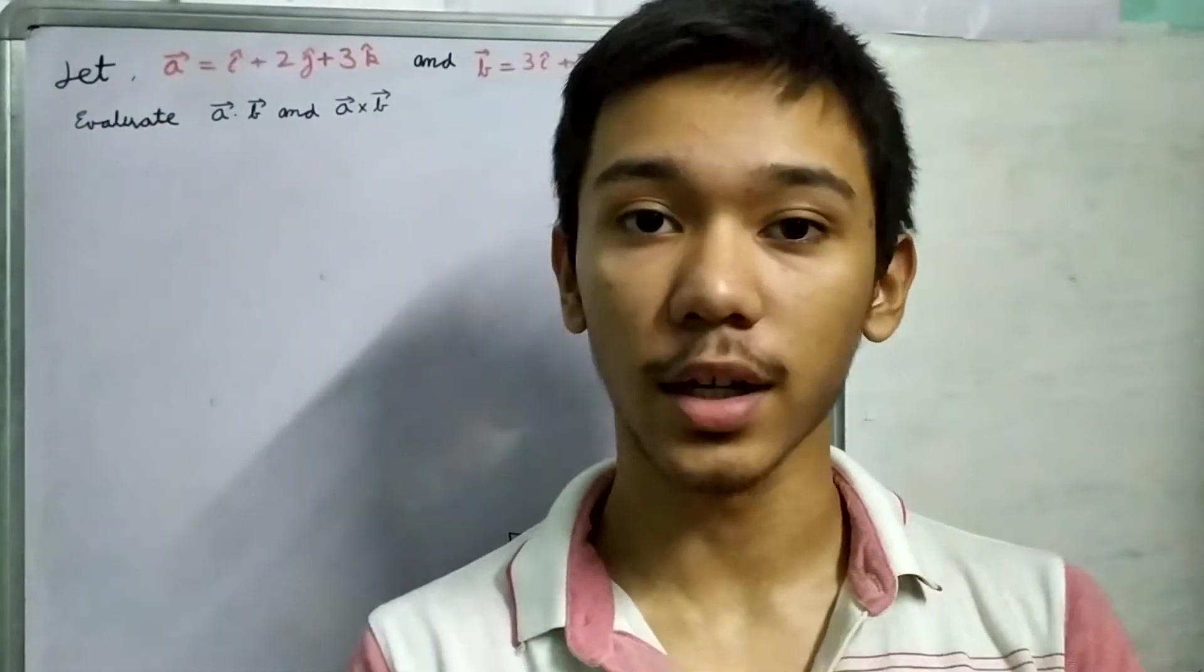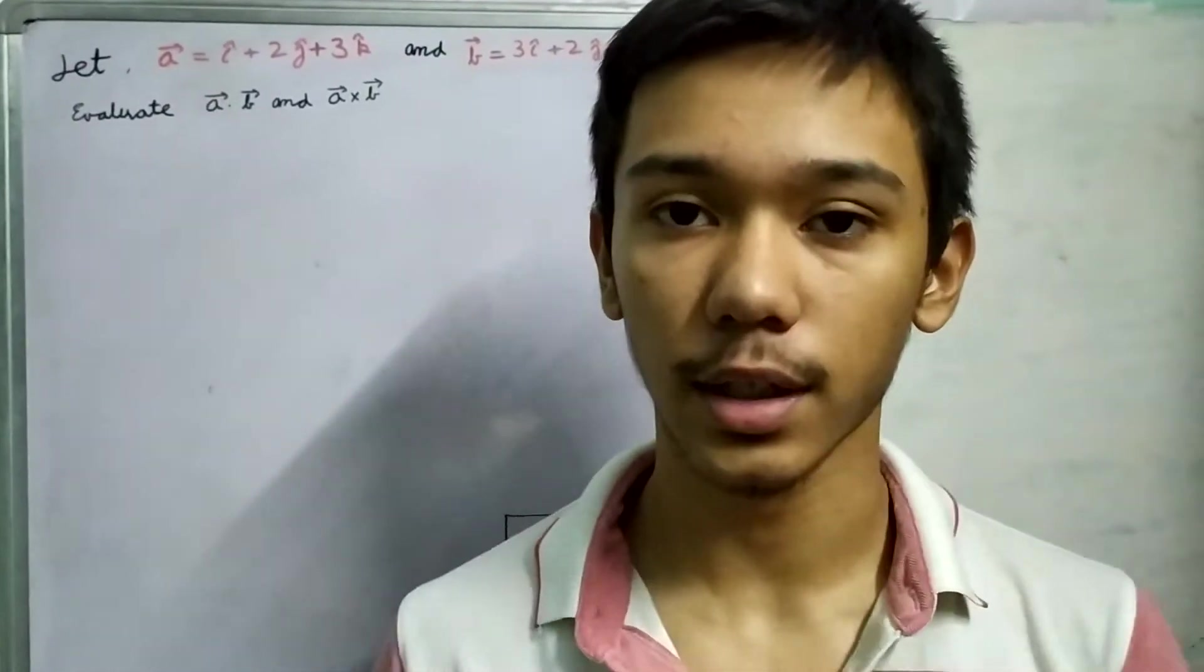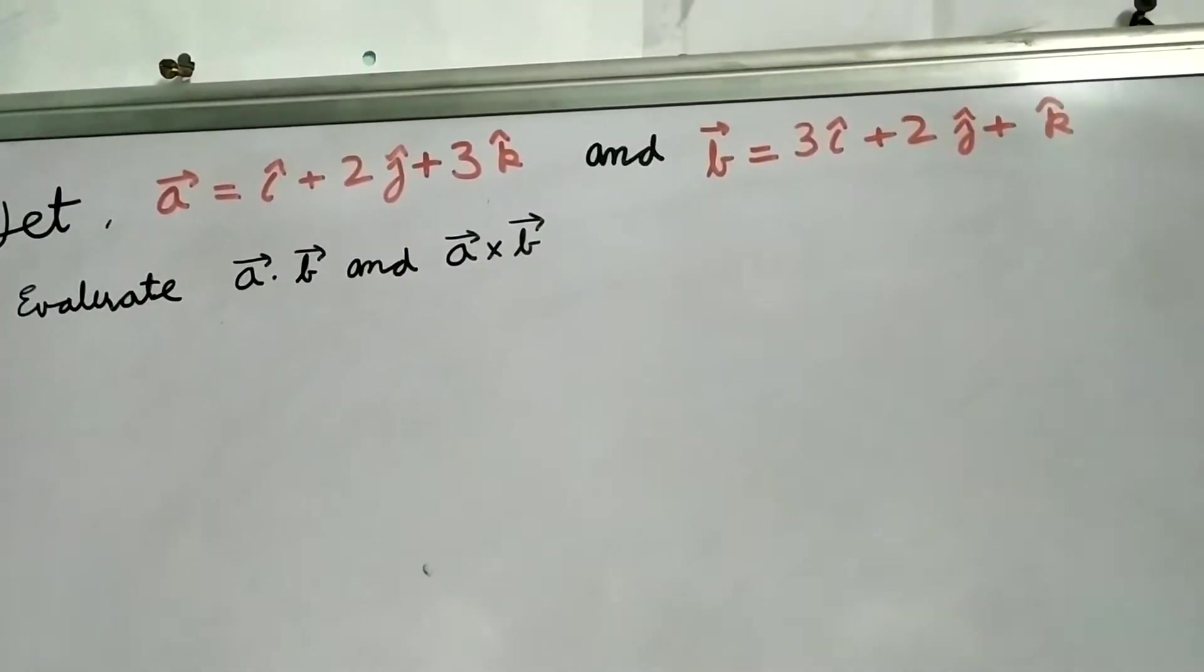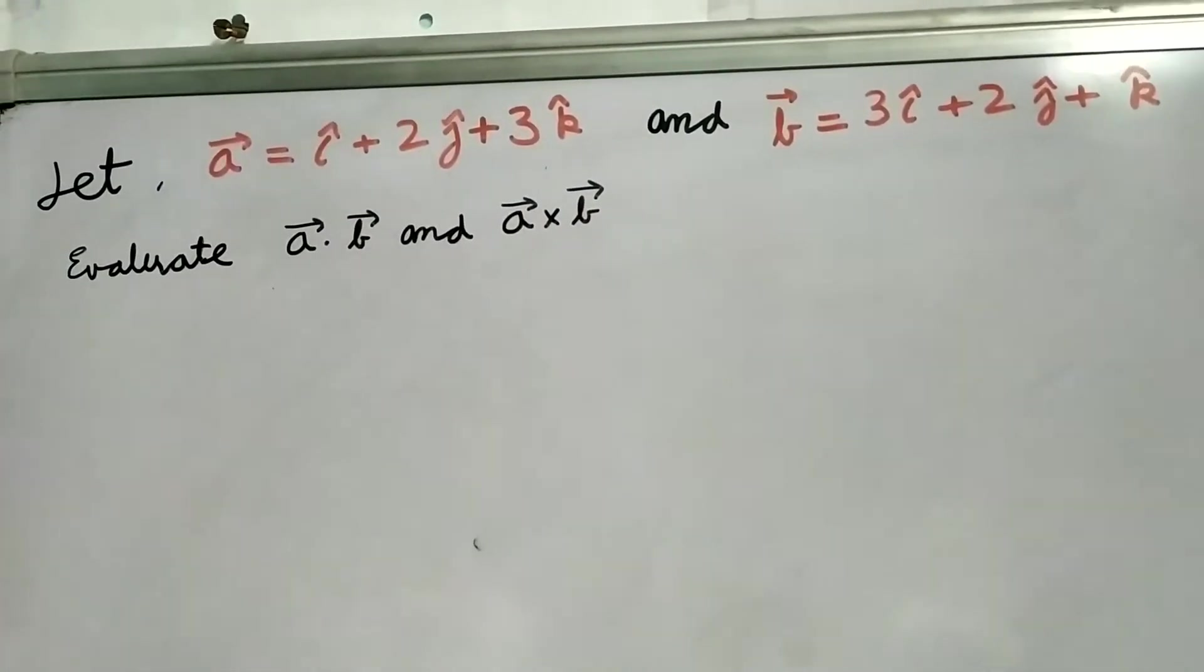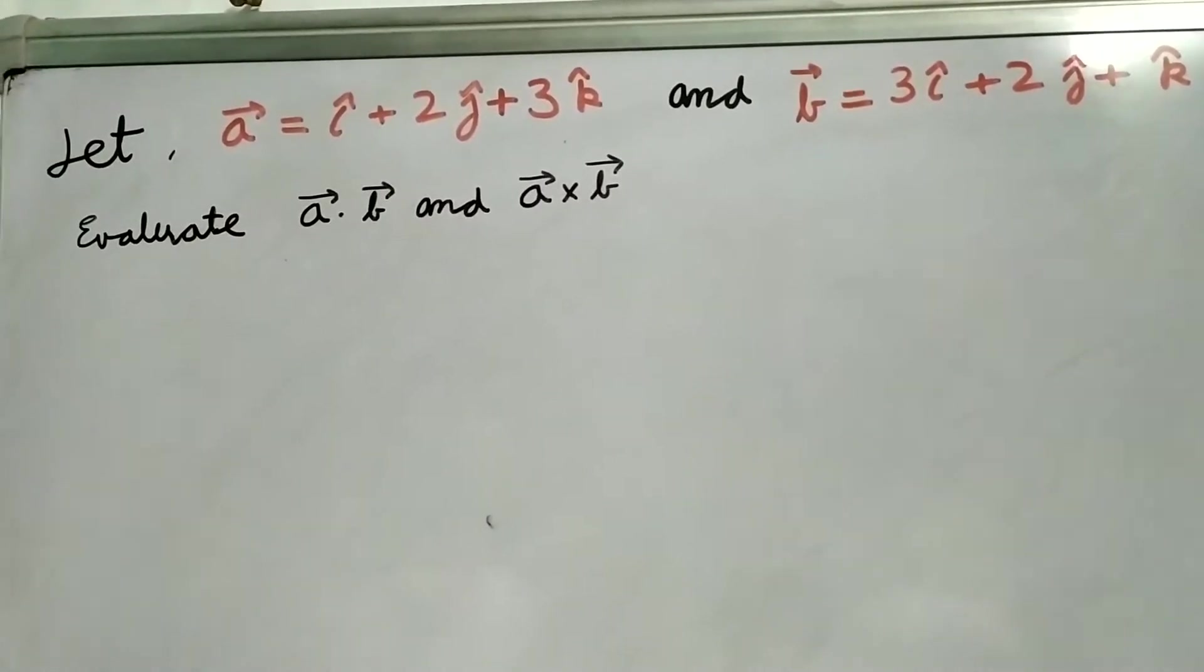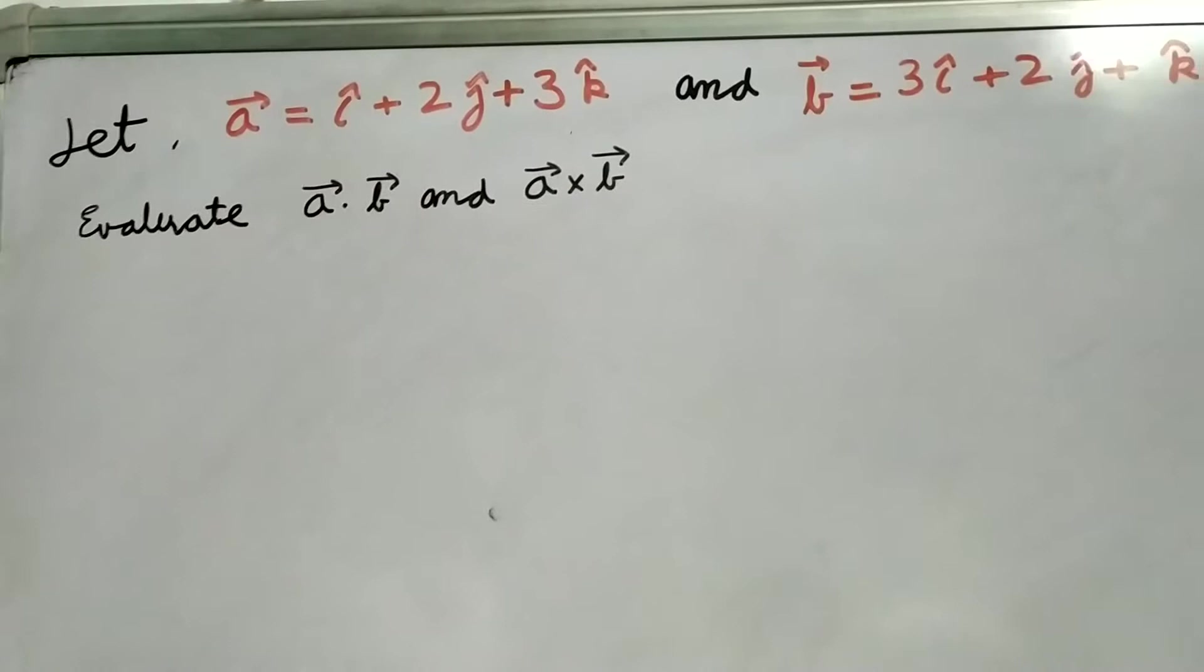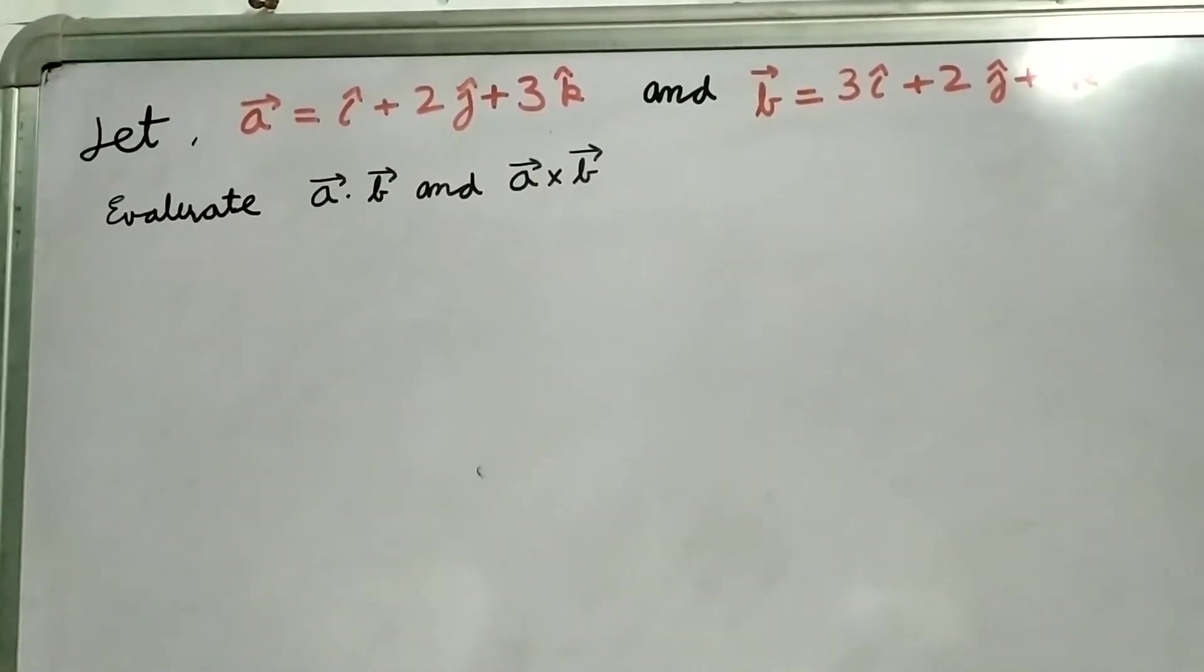Now that we know the cross product and dot product of two vectors, how to evaluate them, let us do an example. So let A is equal to i cap plus 2 j cap plus 3 k cap and vector B equal to 3 i cap plus 2 j cap plus k cap. And now we need to evaluate dot product of A and B and cross product of A and B.